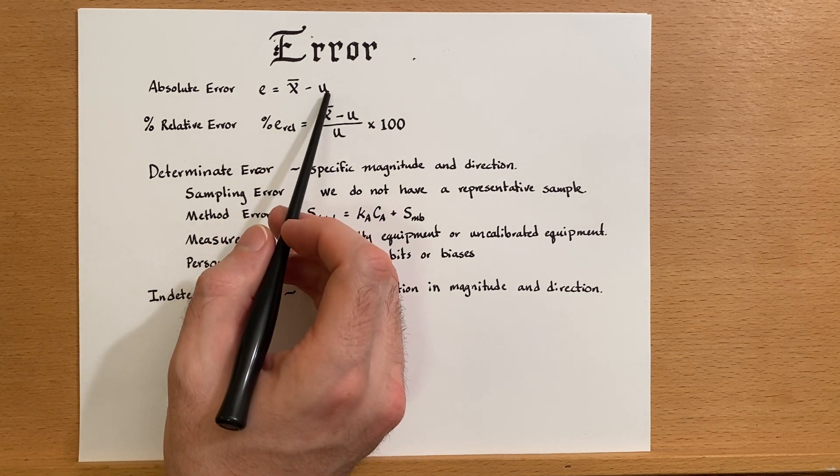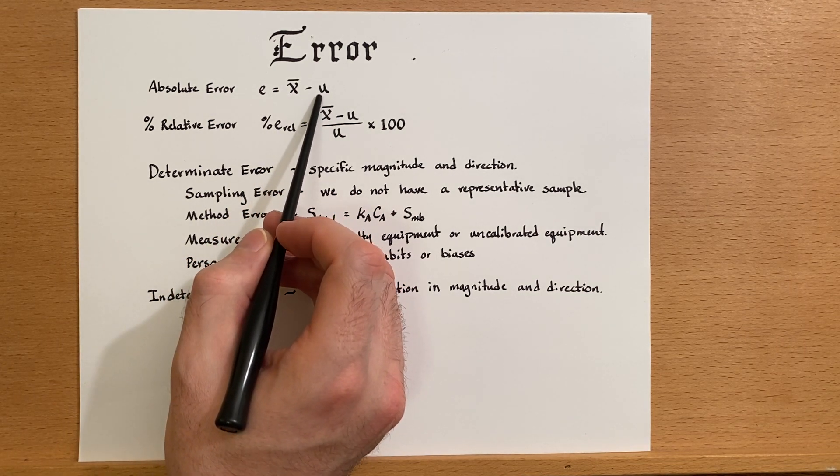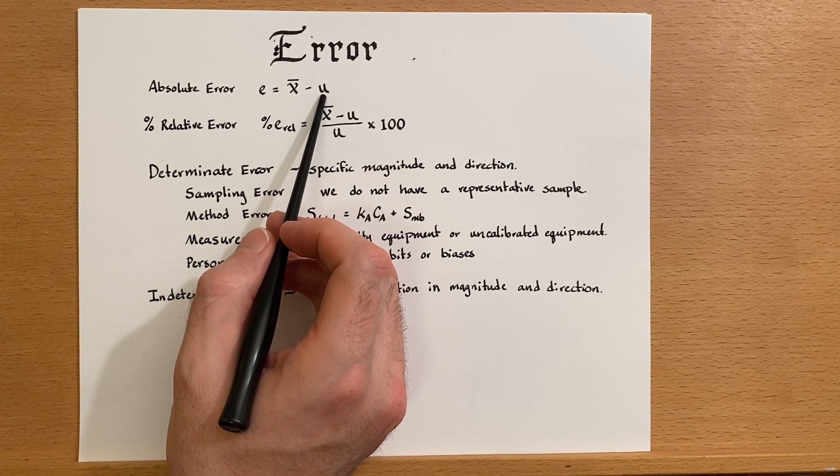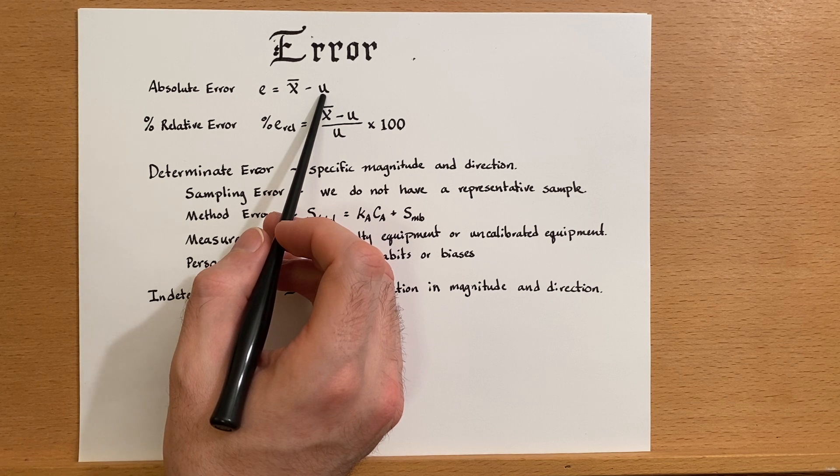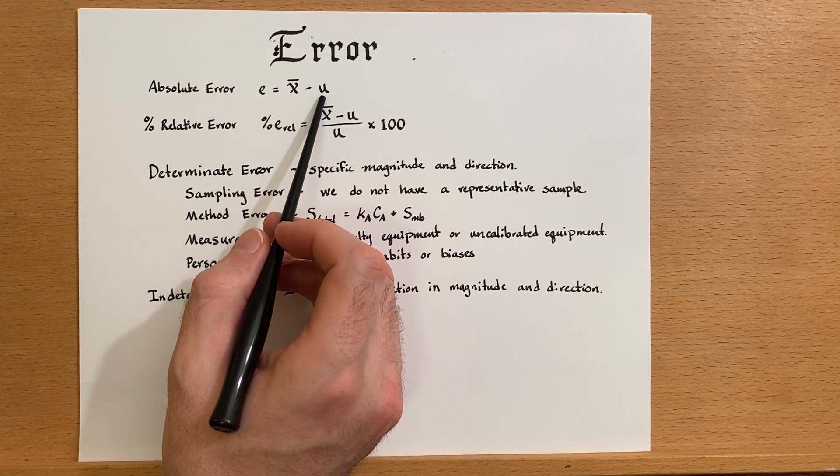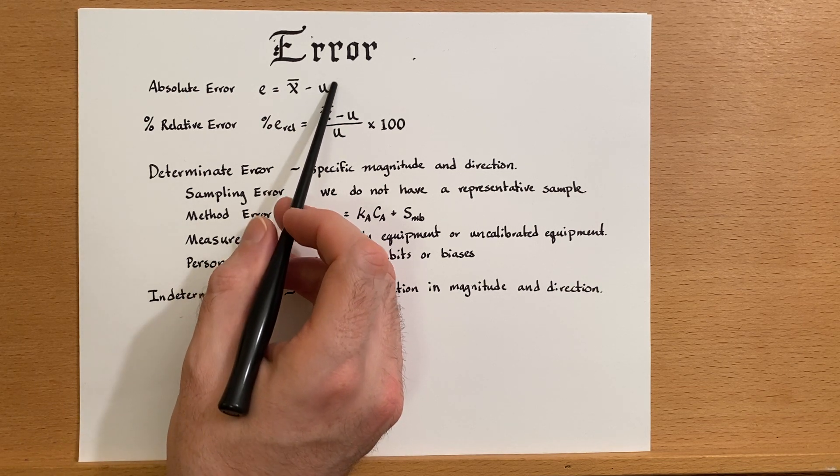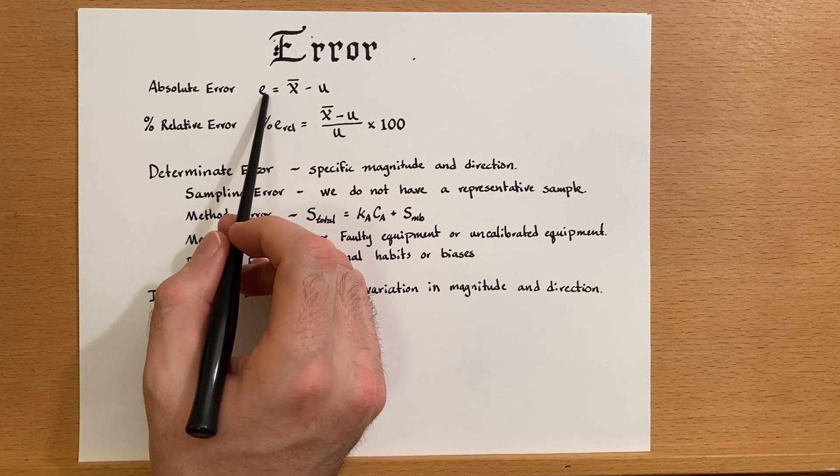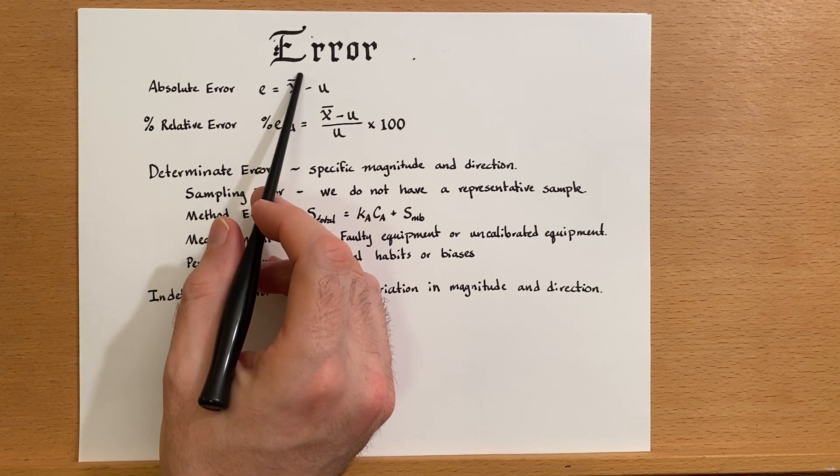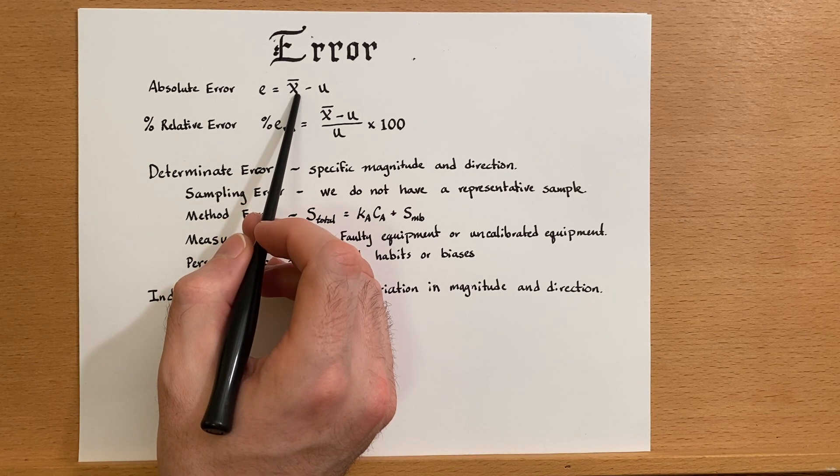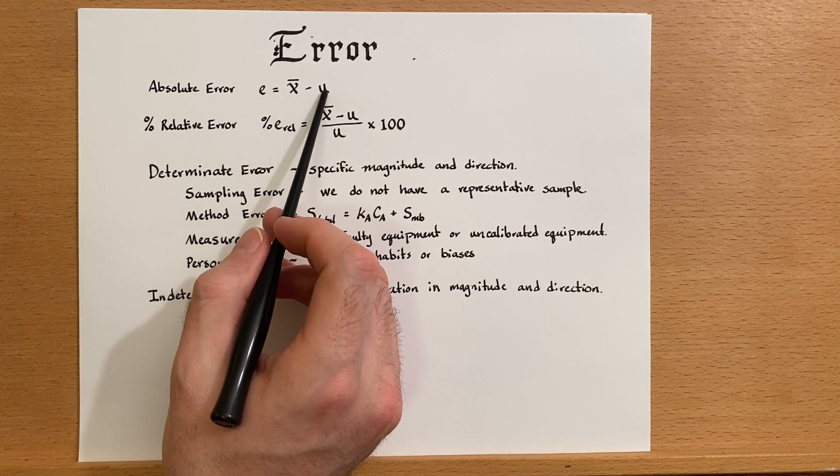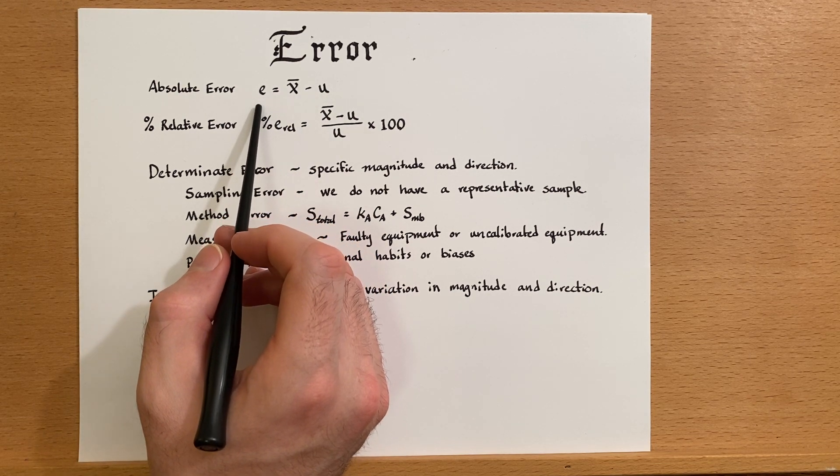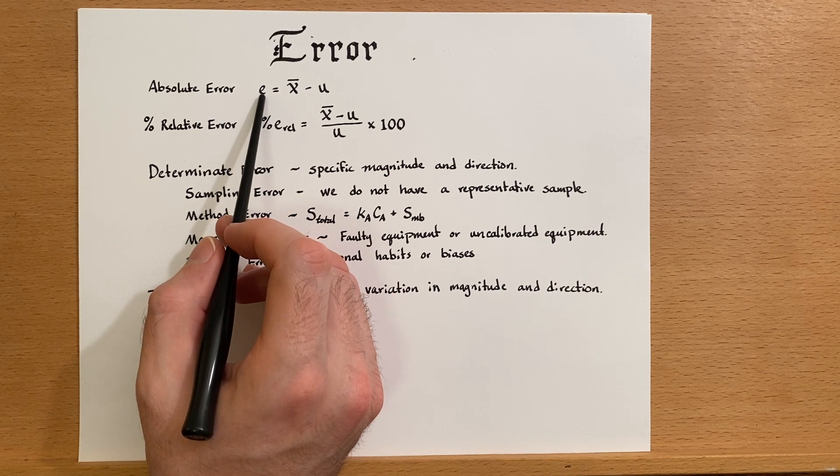So what is error? Well, error is some deviation from the actual expected value. The expected value, or the accepted value, or the true value, is represented by this μ. Here's our error: if we take the sample average that we've calculated, the mean, and subtract the expected value, that's our error.